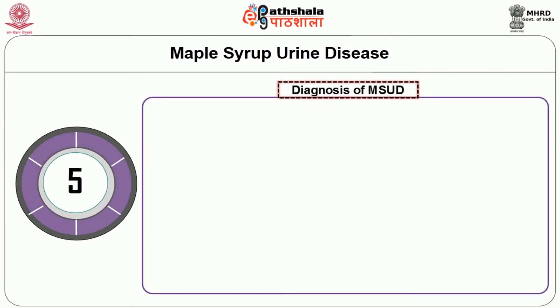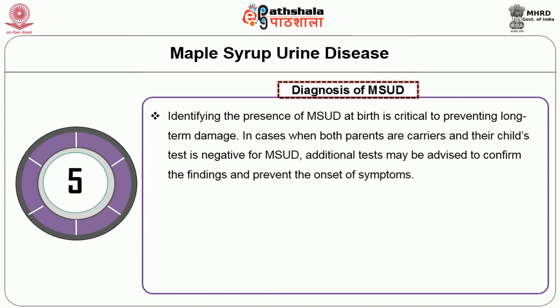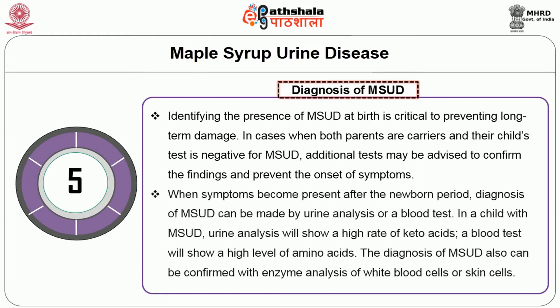Identifying MSUD at birth is critical to prevent long-term damage. Where both parents are carriers and a child's test is negative, additional tests may be advised to confirm findings. When symptoms appear after the newborn period, diagnosis can be made by urine analysis showing a high rate of keto acids, or a blood test showing high levels of amino acids. Diagnosis can also be confirmed with enzyme analysis of white blood cells or skin cells.